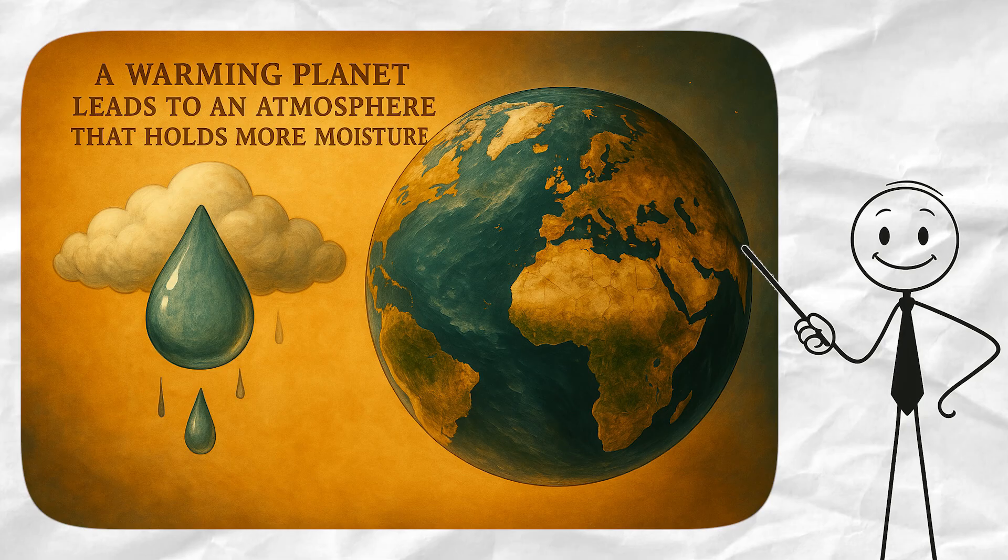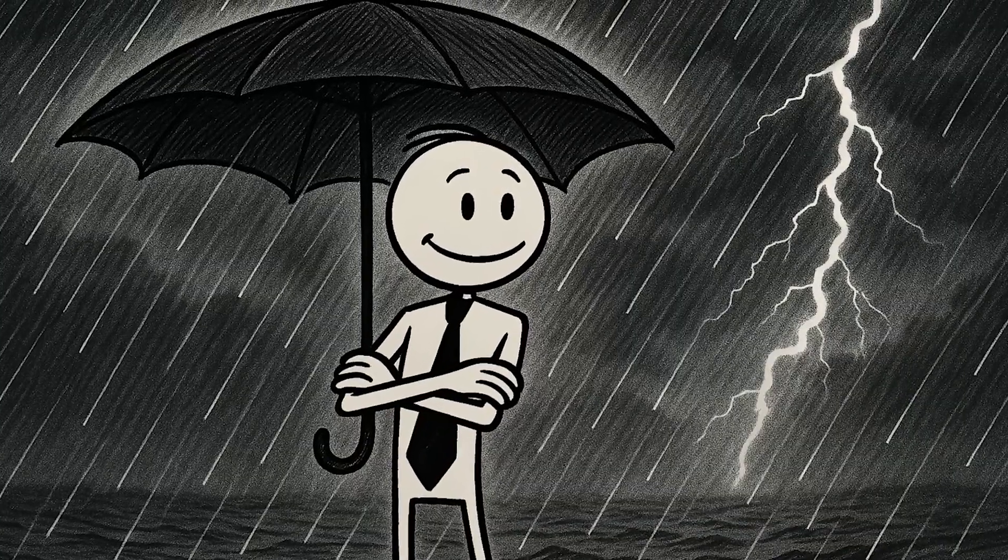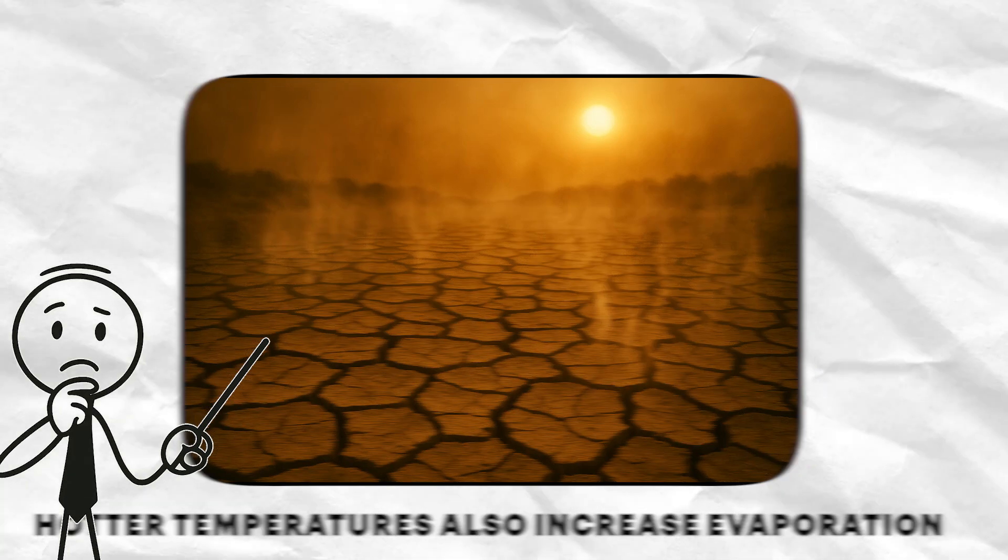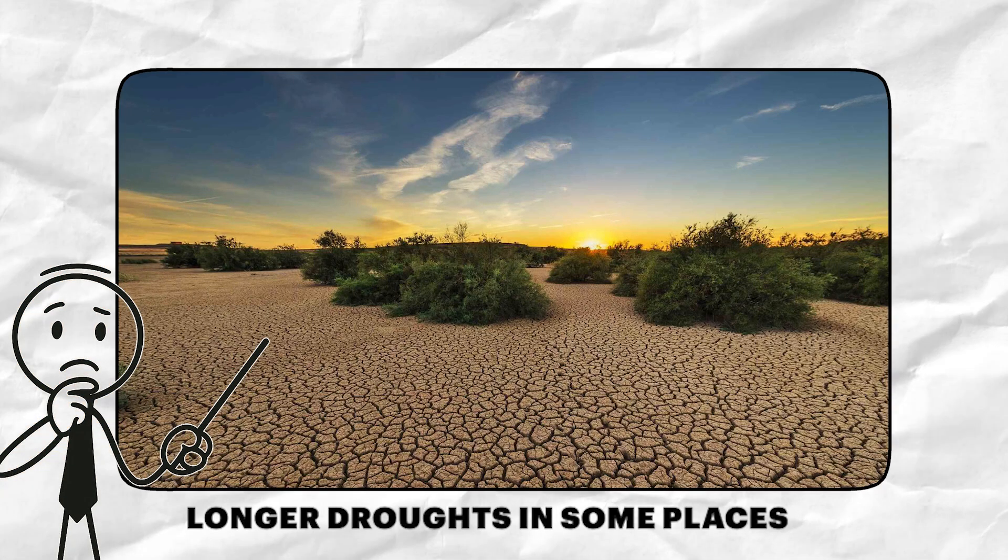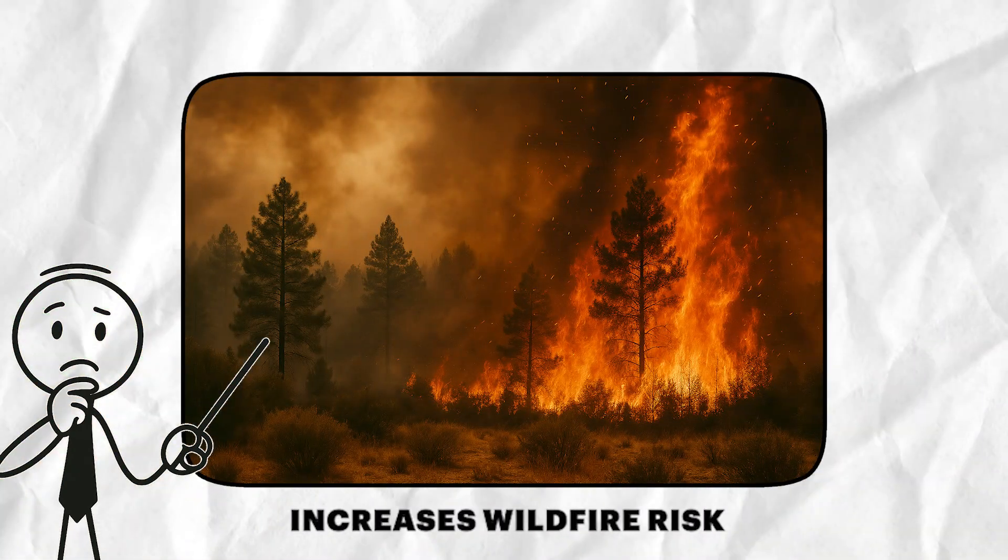let's talk about how climate change is shaking things up. As the planet warms, the atmosphere can hold more moisture. That means when it rains, it pours. Heavier downpours, stronger storms, and flooding are becoming more common. On the flip side, hotter temperatures also increase evaporation. That can mean longer droughts in some places, which dries up rivers, stresses crops, and even increases wildfire risk.